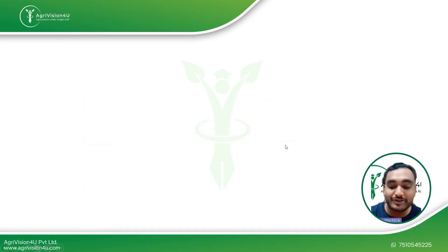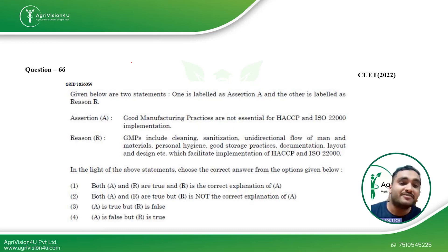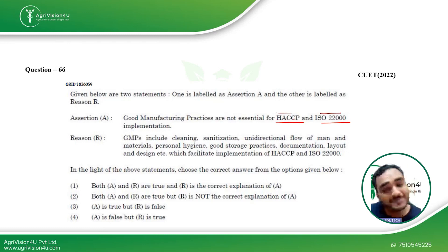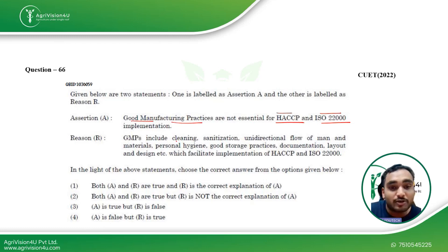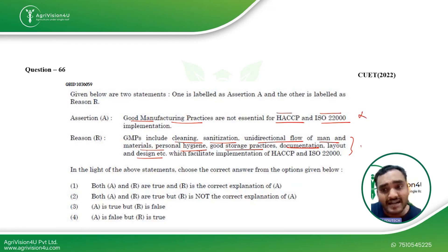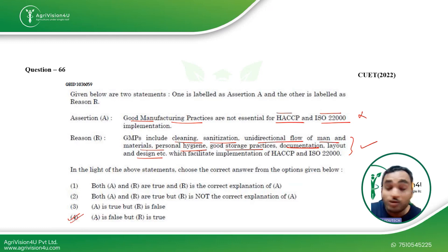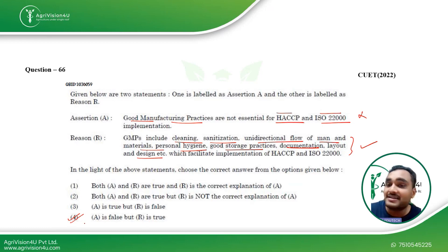The next assertion-reason question states: GMP are not essential for HACCP and ISO 22000. This is false — GMP is actually a very important part of both HACCP and ISO 22000. GMP includes cleaning, sanitation, unidirectional flow of man and materials, personal hygiene, good storage practices, documentation, layout and design. So the assertion is false and the reason is correct, making option four — first is false, second is true — the right answer.